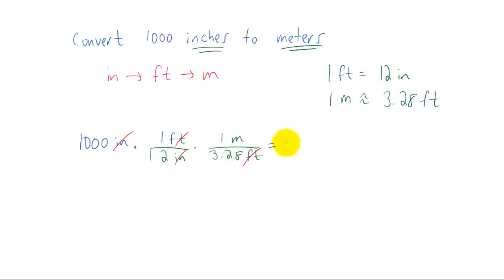All we have to do now is some multiplication and some division. You'll want to check my work on this, but I'm getting 25.41 meters. So we just learned that 1,000 inches is 25.41 meters.